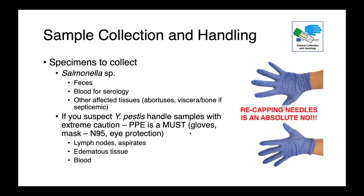As far as samples to collect — in cases of salmonellosis: feces, blood for serology, and if we have dead animals, collecting affected tissues such as abortuses, placentas, abdominal viscera, or samples from long bones if we suspect septicemia. If you suspect Yersinia pestis, you must handle your samples with extreme caution. Personal protective equipment is essential — this would include gloves, probably an N95 mask, and eye protection. You're going to want to collect lymph nodes, aspirates, any edematous tissue, and blood. You need to use maximal sharps precautions; you absolutely do not want to cut yourself while working with or handling these tissues.